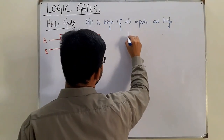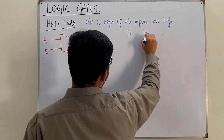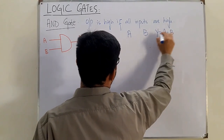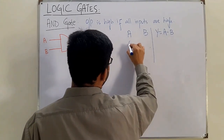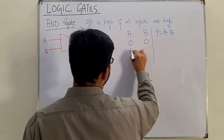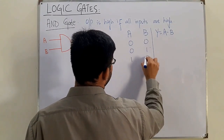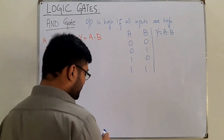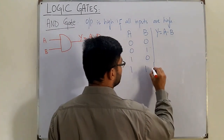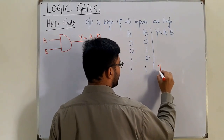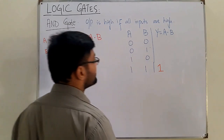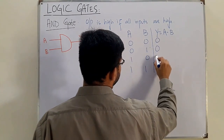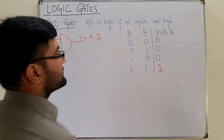For the two-input AND gate truth table, we have A, B, and output Y = A AND B. The four input combinations are: 0,0 → 0; 0,1 → 0; 1,0 → 0; and 1,1 → 1. The output is high only when both inputs are high.